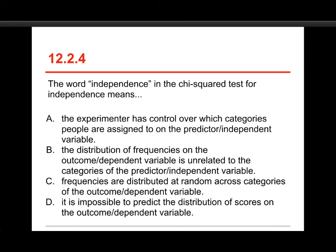Next one. The word independence in the chi-squared test for independence means: a, the experimenter has control over which categories people are assigned to on the predictor or independent variable; b, the distribution of frequencies on the outcome or dependent variable is unrelated to the categories of the predictor or independent variable; c, frequencies are distributed at random across categories of the outcome or dependent variable; and d, it is impossible to predict the distribution of scores on the outcome or dependent variable. Long wordy sentences. It's a lot to get through, but I do have to be particular about the way these things are phrased. The answer is b.